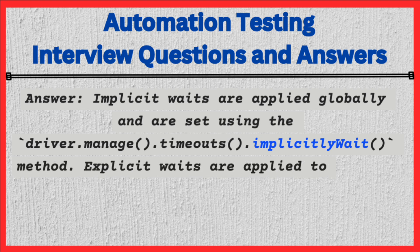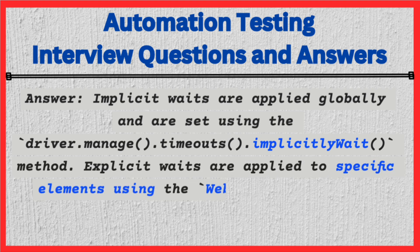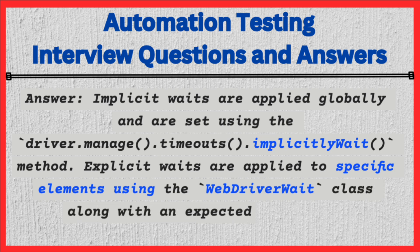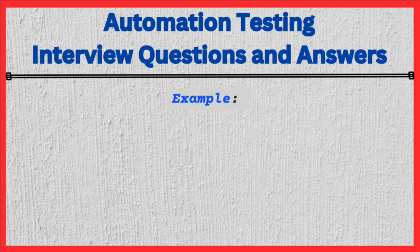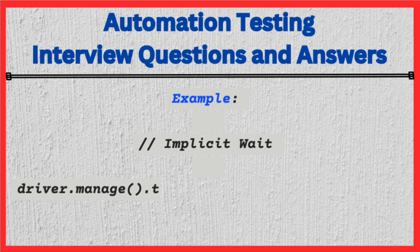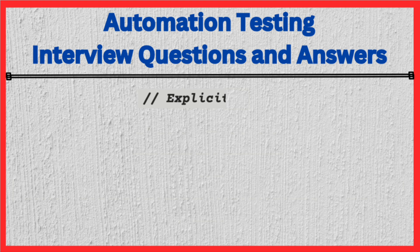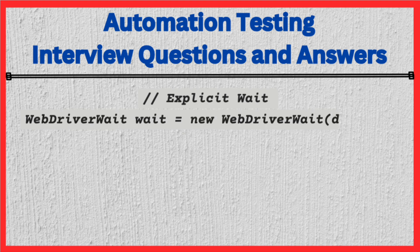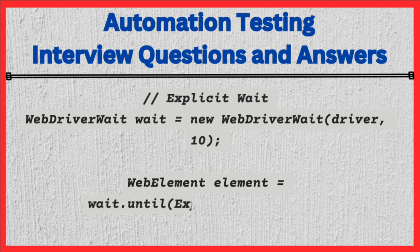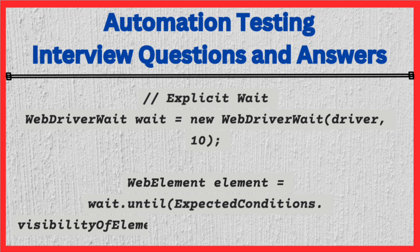Explicit waits are applied to specific elements using the WebDriverWait class along with an ExpectedCondition. Example: // Implicit wait: driver.manage().timeouts().implicitlyWait(10, TimeUnit.SECONDS); // Explicit wait: WebDriverWait wait = new WebDriverWait(driver, 10); WebElement element = wait.until(ExpectedConditions.visibilityOfElementLocated(By.id("elementId")));